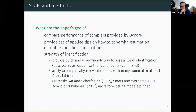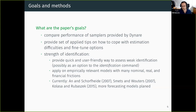This paper is still work in progress and I'm happy if you have ideas. Maybe we can add an option to the identification command to automate this, though it is a bit time-consuming. Right now we have done the analysis for the An-Schorfheide model — a small but very well-studied model — and the Smets-Wouters model. We're looking for empirical DSG models used for forecasting, and we've looked into the Colas and Rubashek paper, but are open to suggestions.